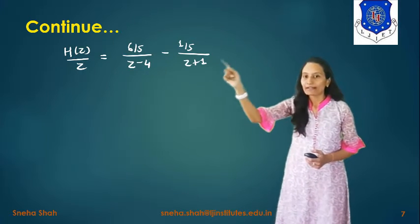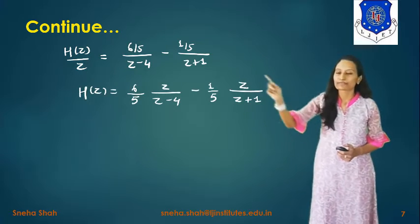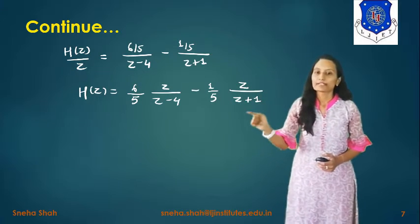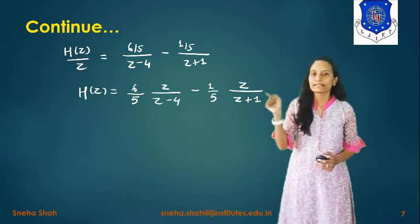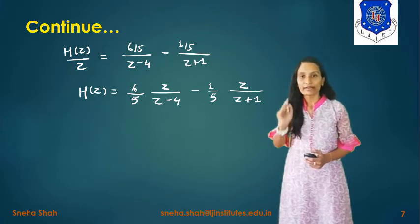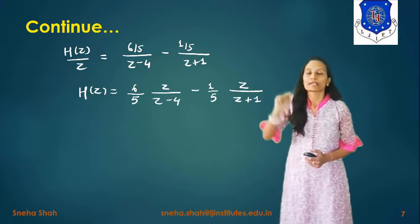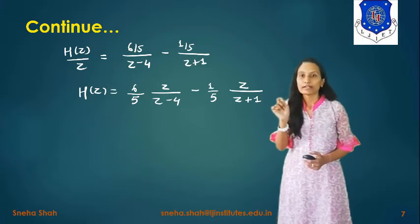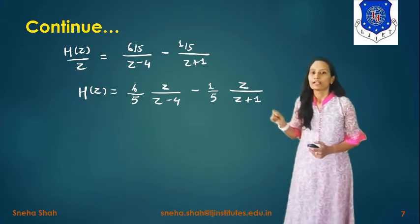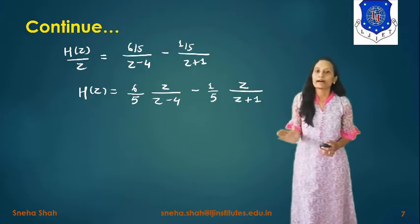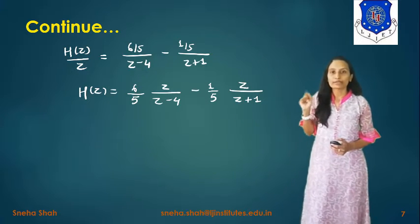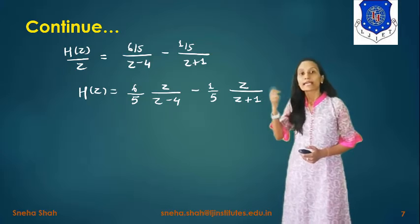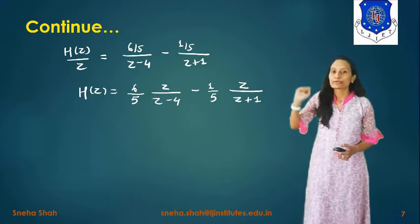We multiplied by z because we need to find the inverse Z-transform of H(z). Up to the previous step, the expression was in the form of H(z)/z, so we multiply both sides by z to get H(z). Now we take the inverse Z-transform. Recalling the standard Z-transform pair: z/(z - a) corresponds to aⁿu(n). We will apply this rule here.